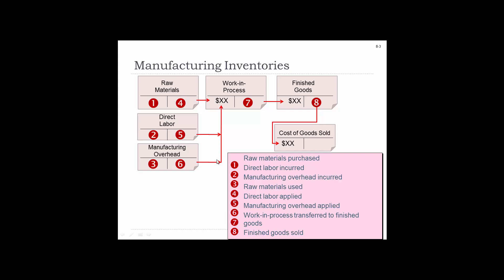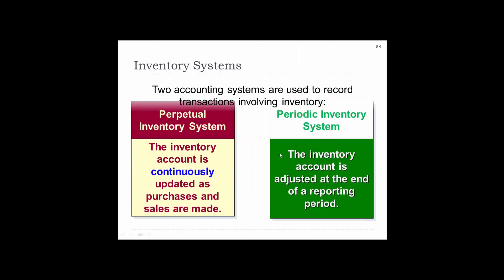So if we're talking about manufacturing inventory, the raw materials are purchased, and then you have direct labor incurred, and then there's also manufacturing overhead. All of these would be combined and then sent into work in process. When we finish work in process, it transfers to finished goods, and then it transfers from finished goods into cost of goods sold, where you'll sell the transaction.